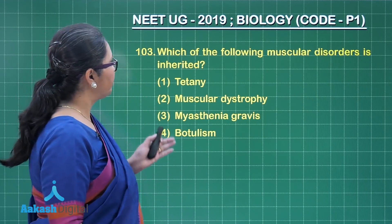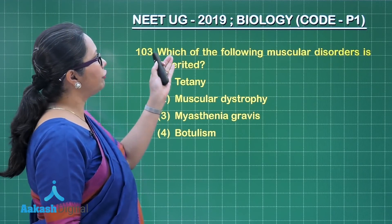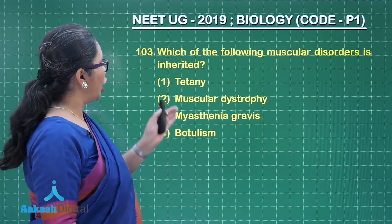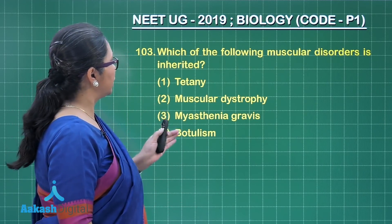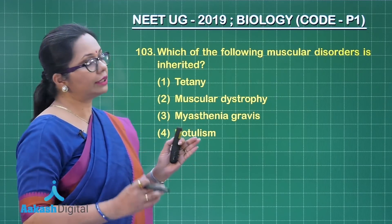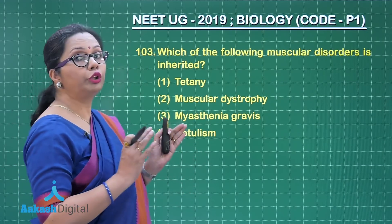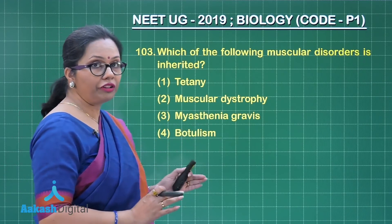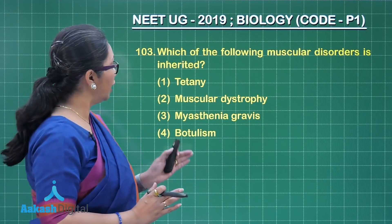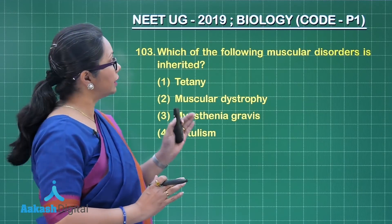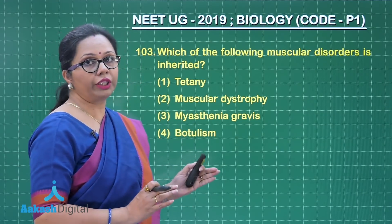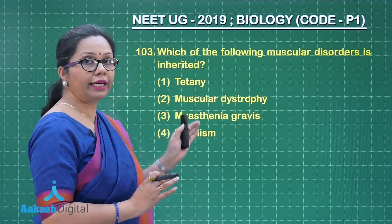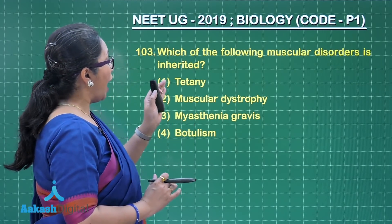Question 103: Which of the following muscular disorders is inherited? The options include tetany, which is muscular spasm due to insufficient calcium; myasthenia gravis, which is an autoimmune disorder; and botulism, a kind of food poisoning due to Clostridium botulinum that results in muscle paralysis.